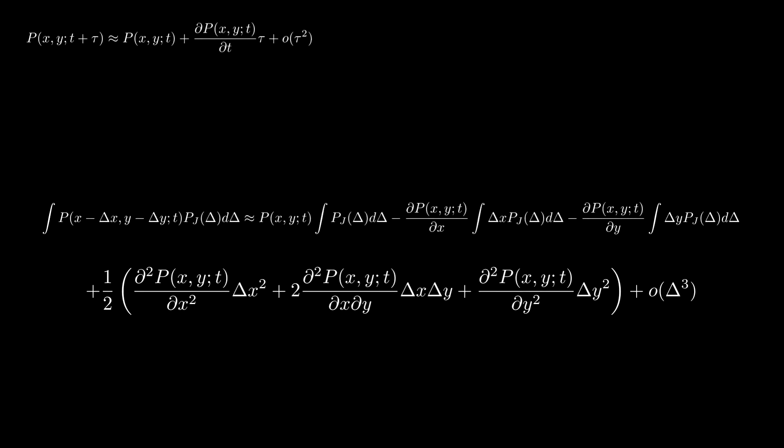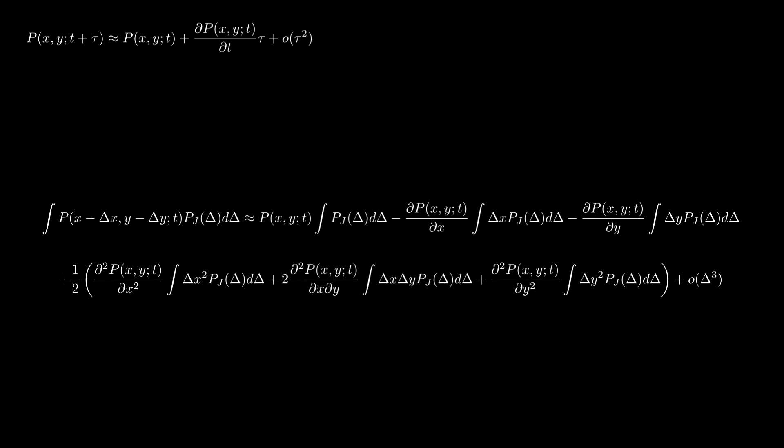Let us now multiply by the distribution of jumps and integrate over all possible jumps on both sides of this expression.